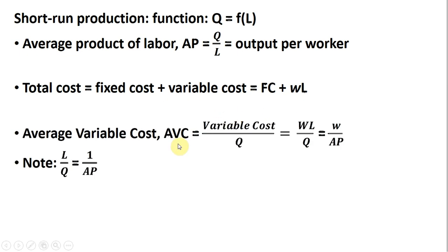Average variable cost is defined as the firm's variable cost divided by units of output. So average variable cost is just the variable cost per unit. On average, how much do we have in each unit in terms of variable cost, in this case labor.